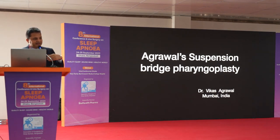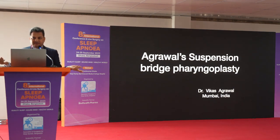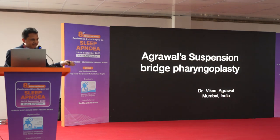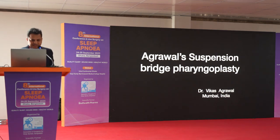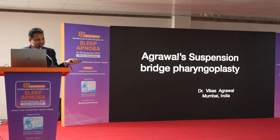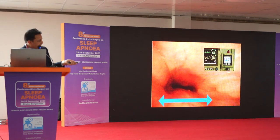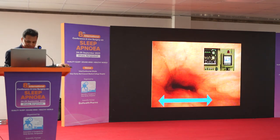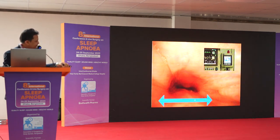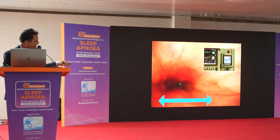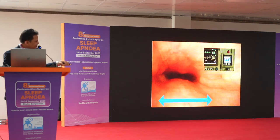If somebody has a lateral collapse and you pull it laterally, it will start collapsing anteroposteriorly. If it is anteroposterior, it will start collapsing laterally. So let us assume that every collapse is a circular collapse. My technique is based on this concept — we treat every collapse as both AP as well as lateral, so nothing is left untreated.